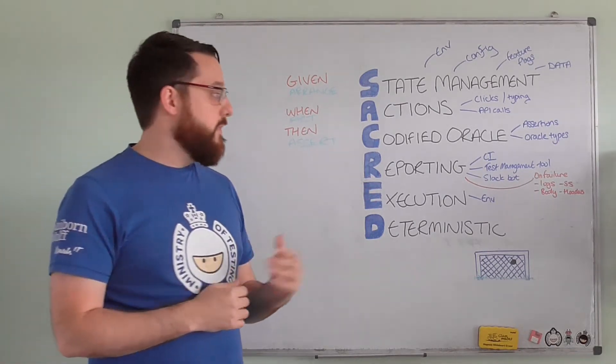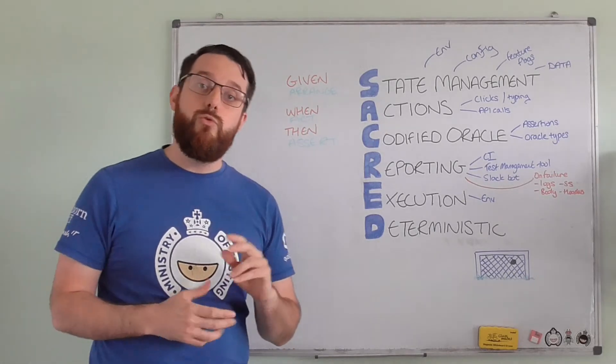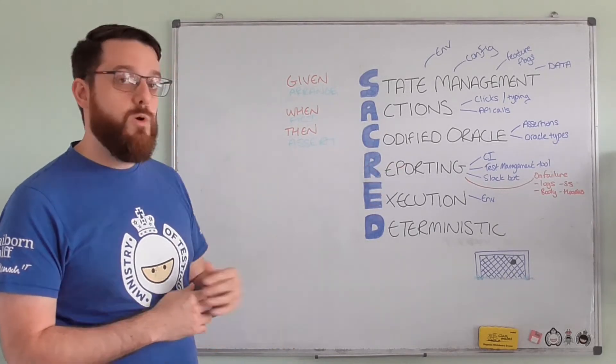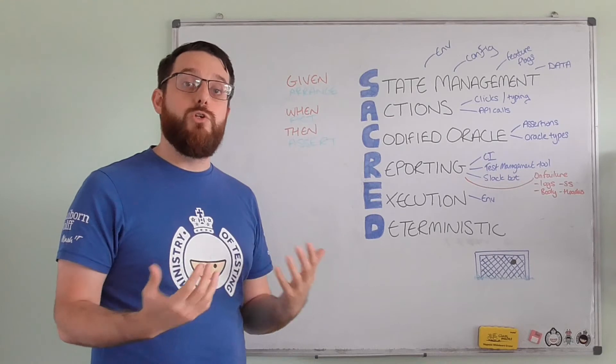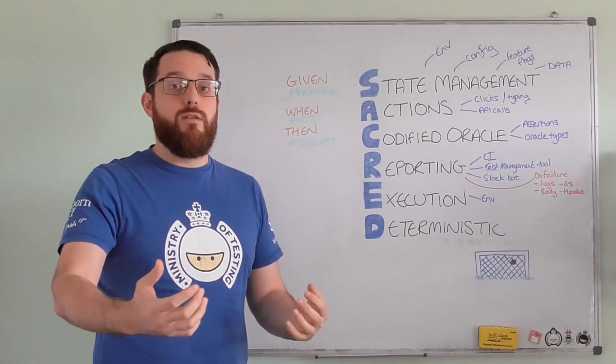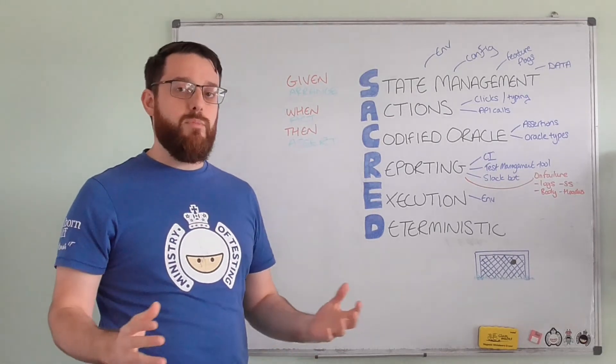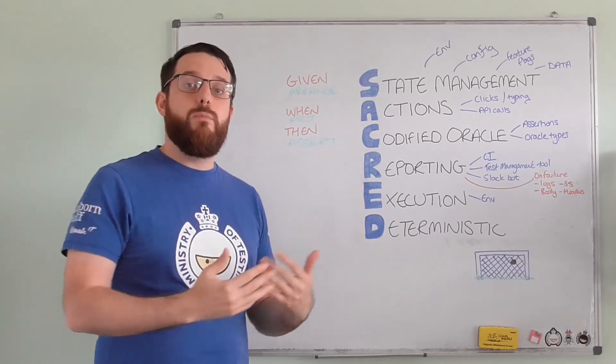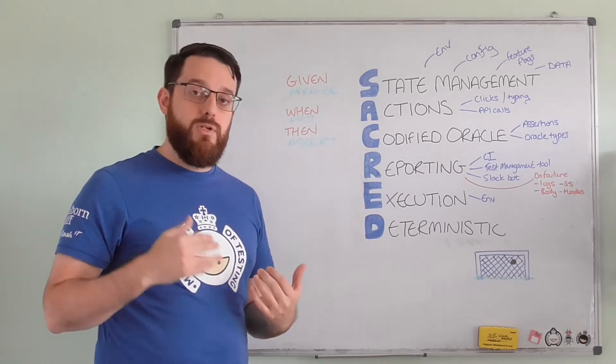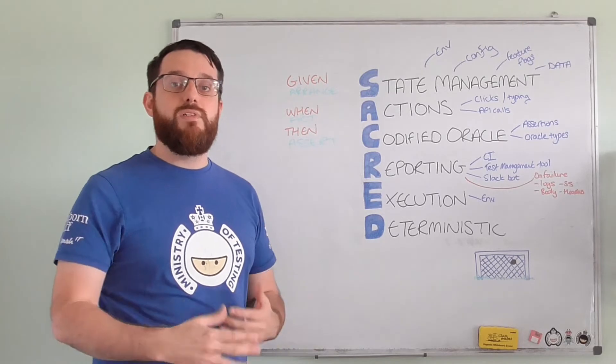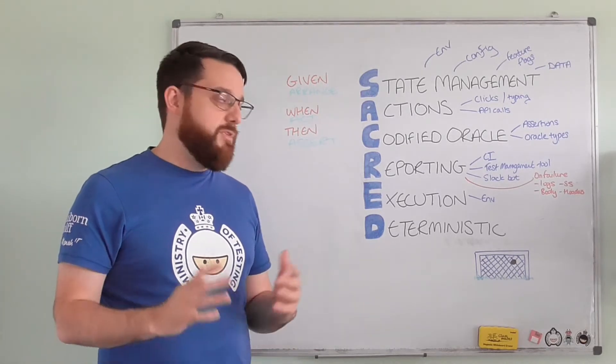Then we move on to the R, and the R's for Reporting. It takes on two forms. The first one is where do your results need to go? So all your scripts have run, they're fast as lightning, you're dead proud. Where do the results go? Do you need to punt them into a CI system? Do you need to have some sort of integration with a test management tool?